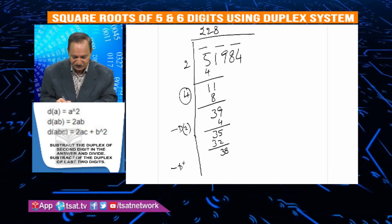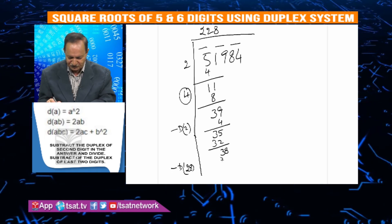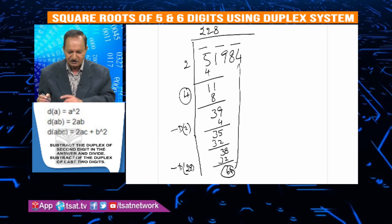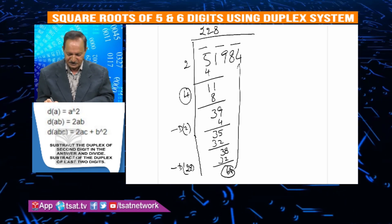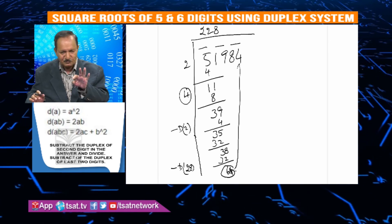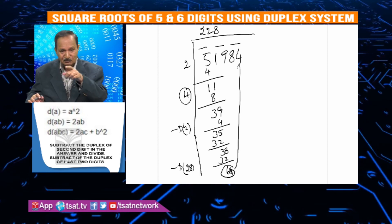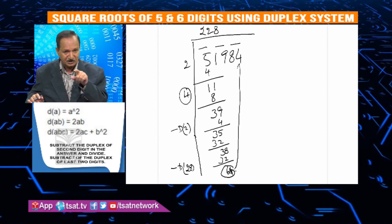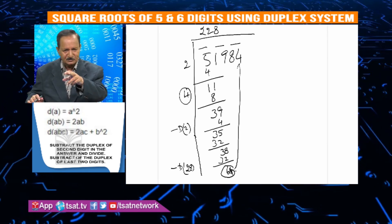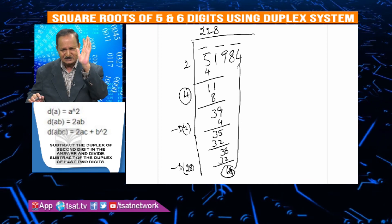With the next step, subtract the duplex of last 2 numbers. The last two numbers are 2 and 8. The duplex is 2 times 2 times 8, which is 32. Subtract the duplex and divide. If you have the right answer, this confirms it. The answer is correct.